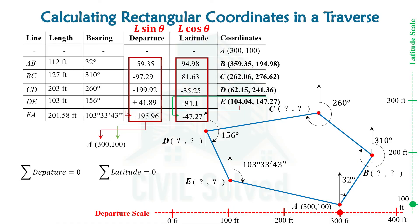Therefore, you can say your calculation is one hundred percent correct if you have calculated the coordinates of a point at the end same as that of the starting point, and if you have got the summation of departure and summation of latitudes equal to zero. This kind of check was not available in the calculation of coordinates when doing it for an open traverse.